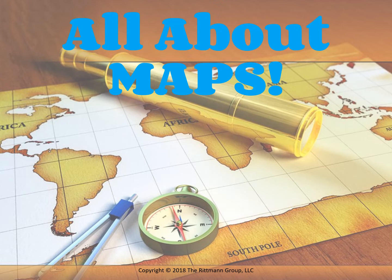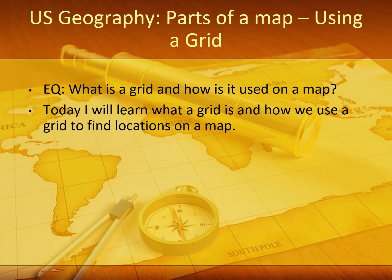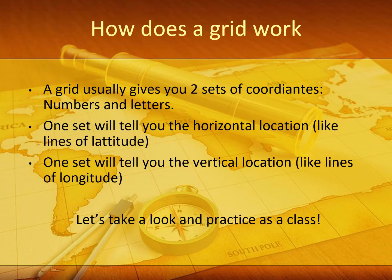Now we're going to focus on grids today. US geography: parts of the map, using a grid. My essential question is: what is a grid and how is it used on a map? Today I will learn what a grid is and how we use a grid to find locations on a map. It's important to know that grids go hand in hand with latitude and longitude — we learn about grids now so that later on you'll have a better understanding of longitude and latitude.